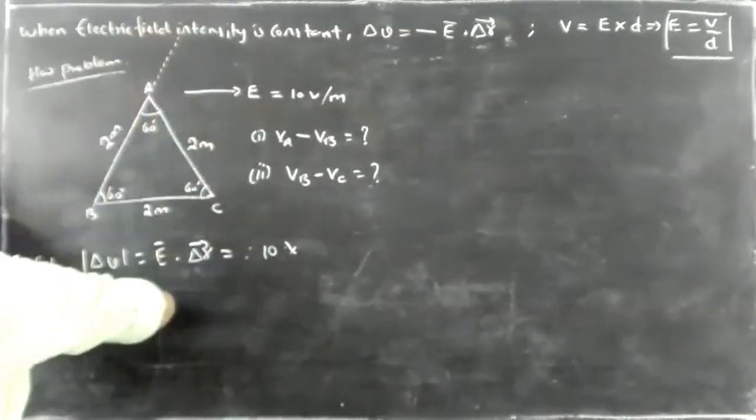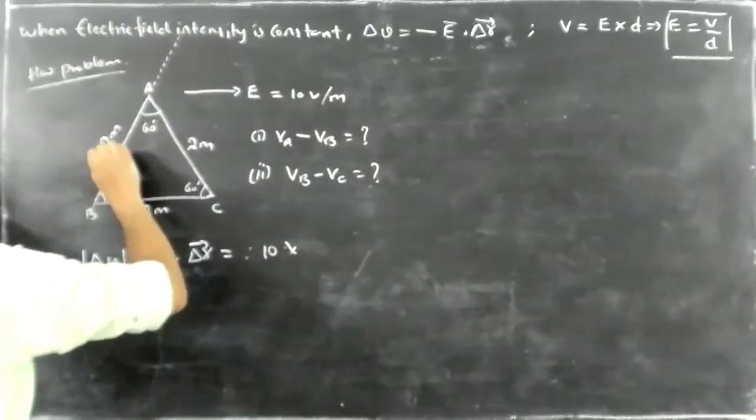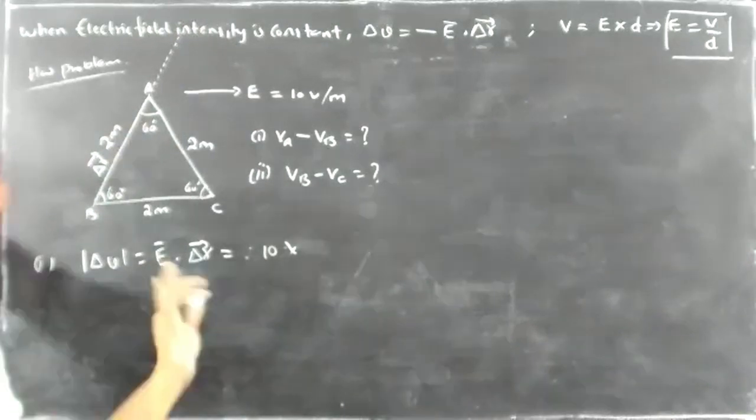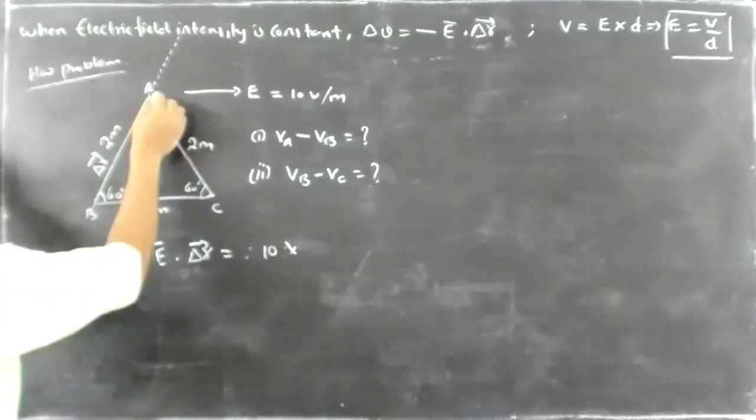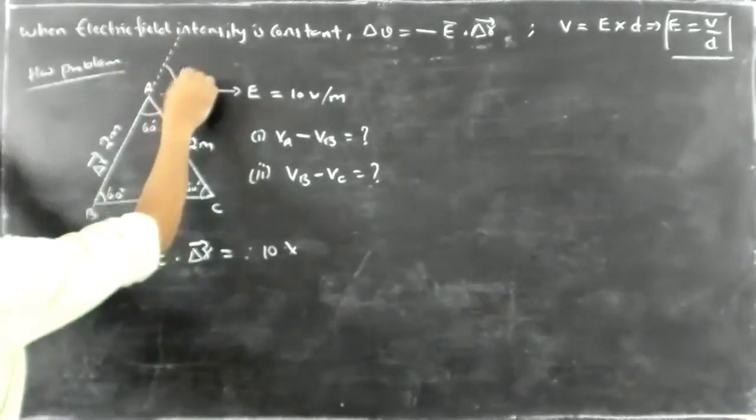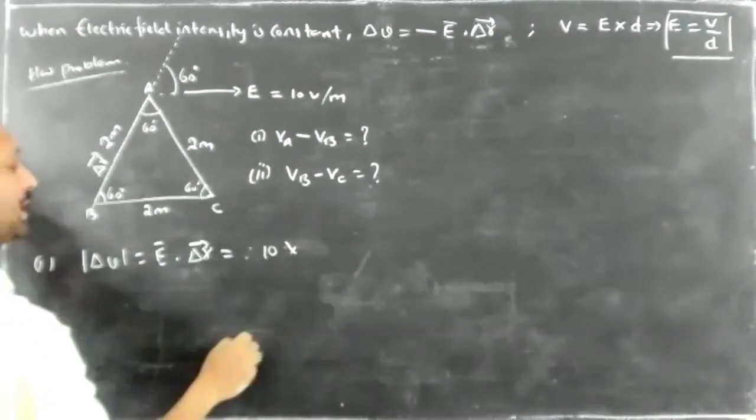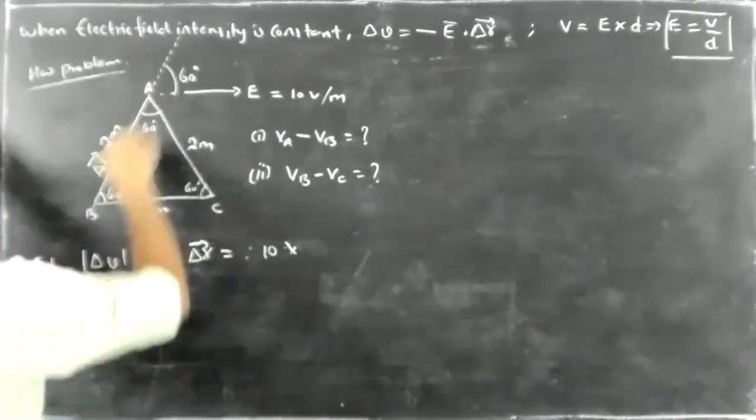Now suppose this is the direction of the delta R. What is the angle between E and delta R bar? It will be 60 degrees. A bar dot B bar is equal to A and E cos theta. What is delta R value?